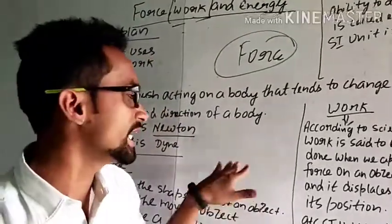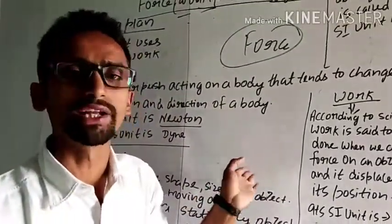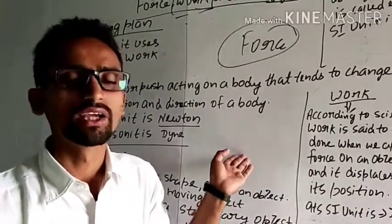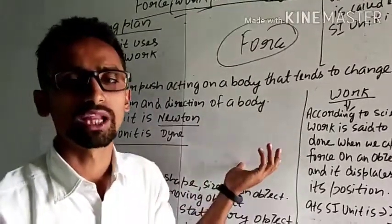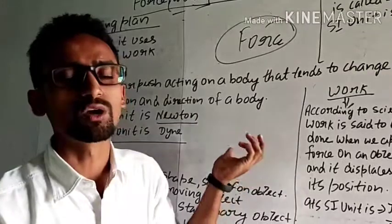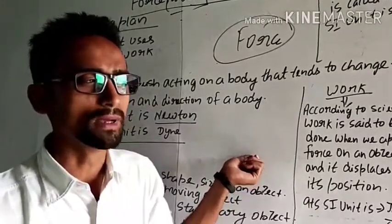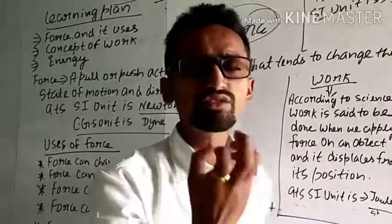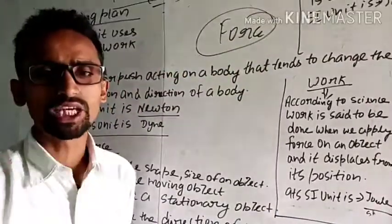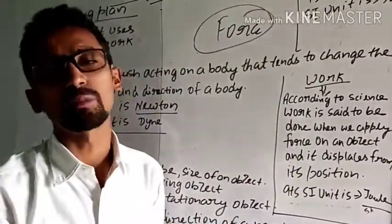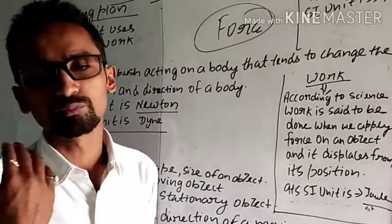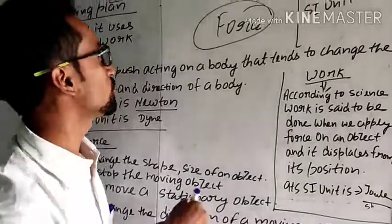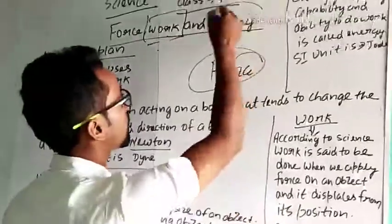Suppose I apply 10 Newton force to the wall and it does not displace from its position — then according to science, work is not done by me. So we can say that if we apply an unbalanced force on an object and it displaces from its position, then work is done.